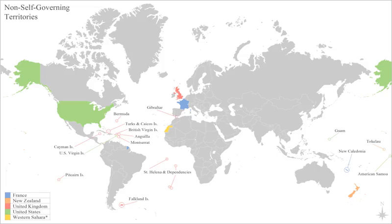The Special Committee on Decolonization maintains the United Nations list of non-self-governing territories, which identifies areas the United Nations believes are colonies. Given that dependent territories have varying degrees of autonomy and political power in the affairs of the controlling state, there is disagreement over the classification of colony.